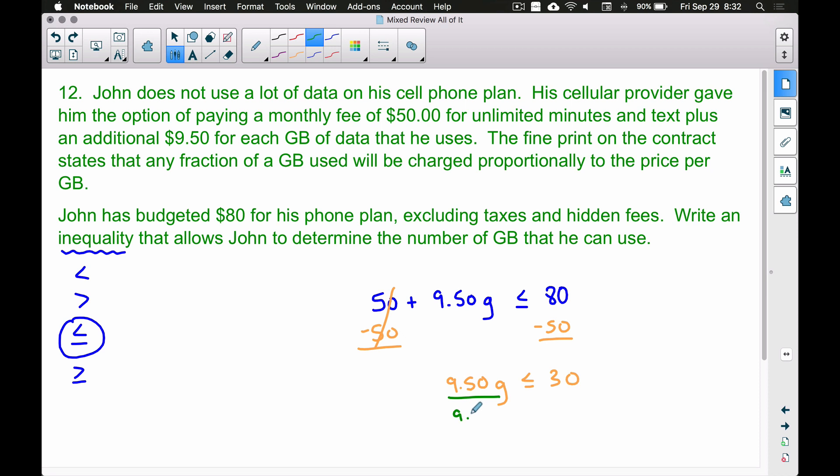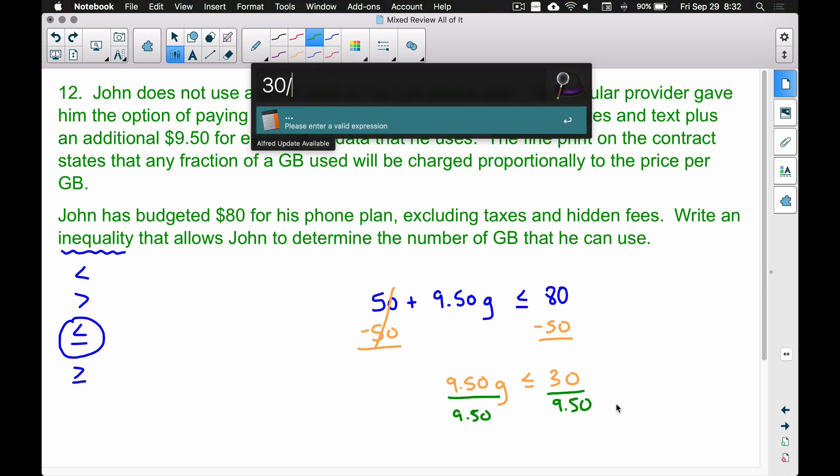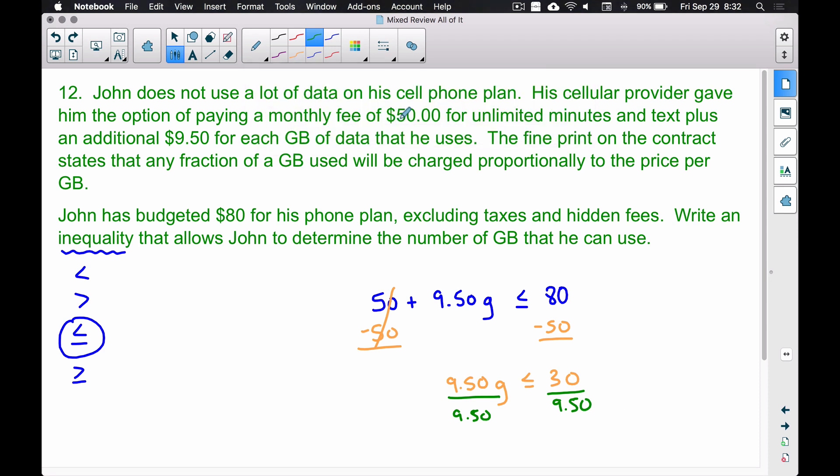9.50 times the number of gigabytes needs to be less than or equal to $30. The way we can get g by itself is to divide by $9.50. Taking that 30 and dividing by $9.50, we're getting somewhere around 3 point blah blah blah. So let's take that, let's copy it, and let's look at this number a little bit more and talk about how many gigabytes can he really use.